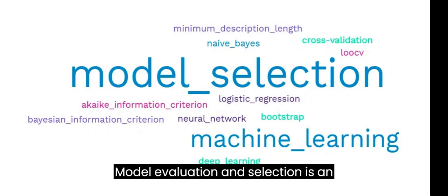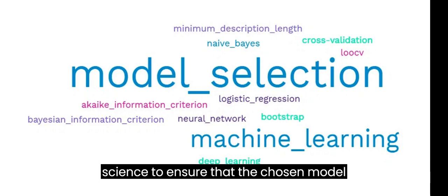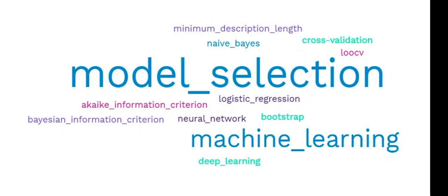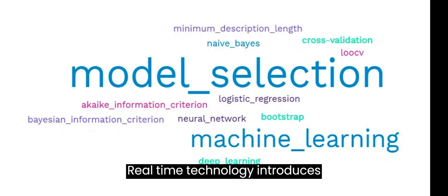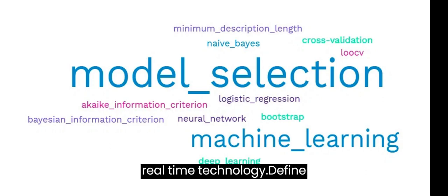Model evaluation and selection is an essential step in machine learning and data science to ensure that the chosen model performs well on unseen data. Real-time technology introduces additional considerations for model evaluation, as it often requires efficient and quick predictions. Here's a general process for evaluating and selecting models in the context of real-time technology.